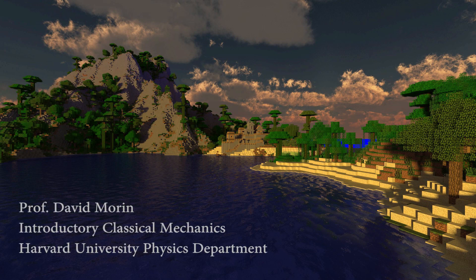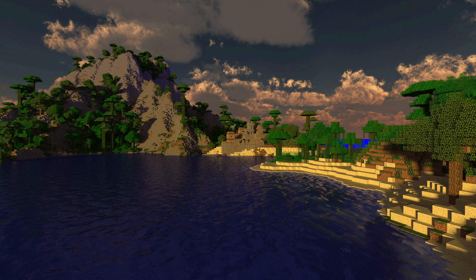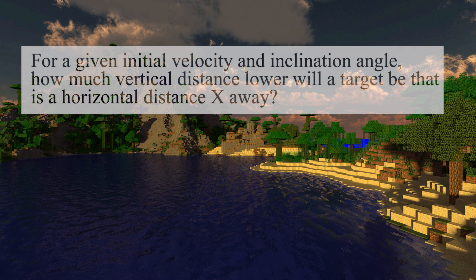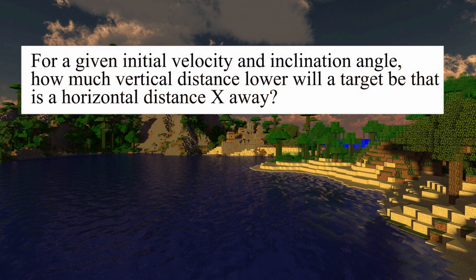The following problem was adapted from Harvard physics professor David Morin's textbook and weekly physics problems. It starts like this: For a given initial speed and inclination angle, how much distance y lower will a target be that is an x distance away?